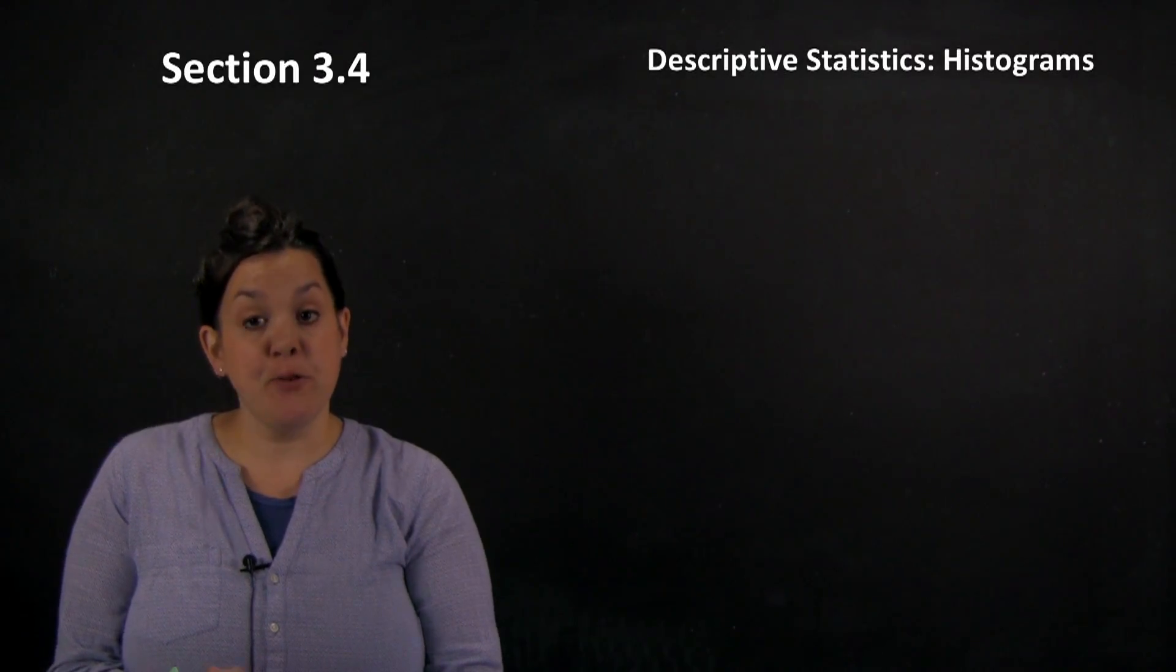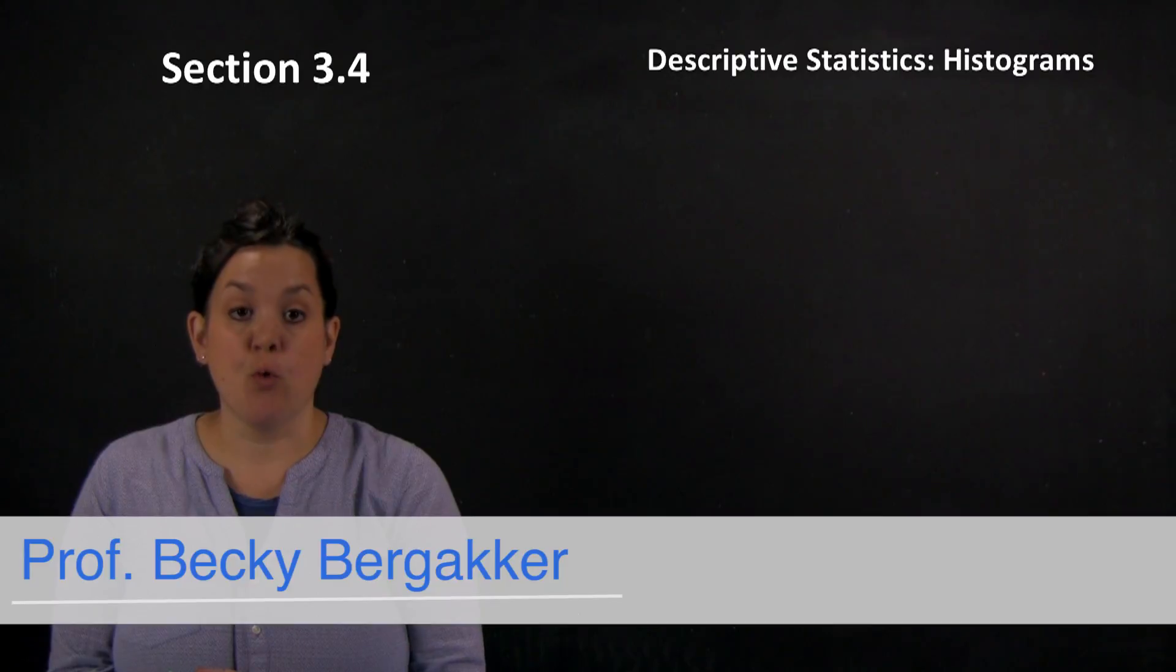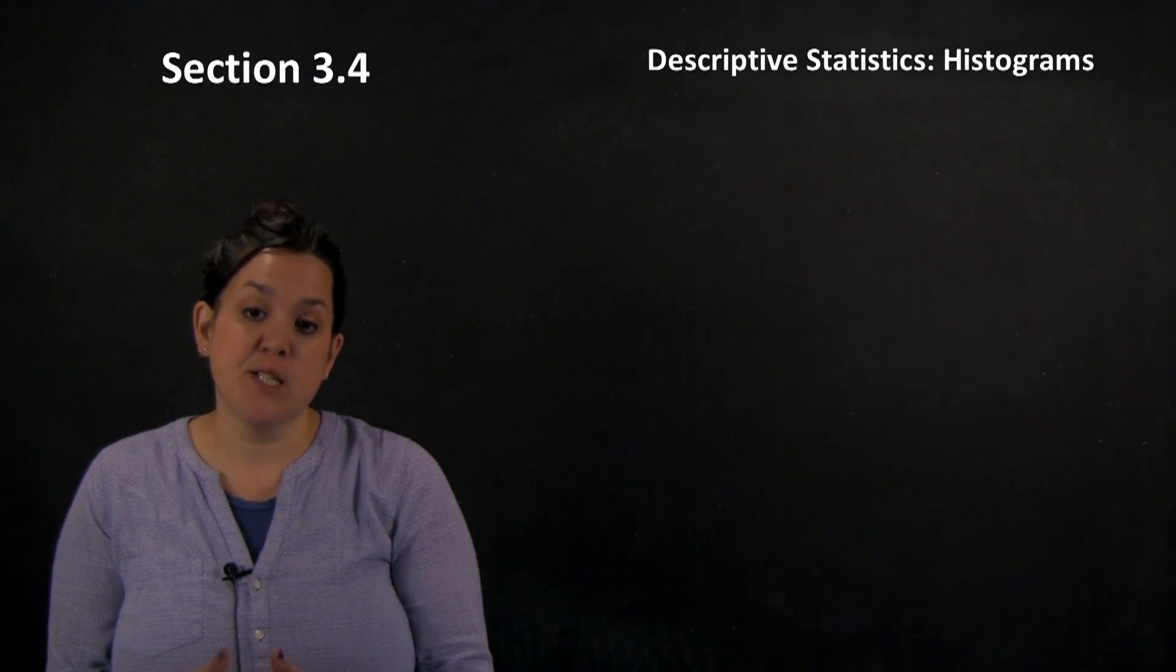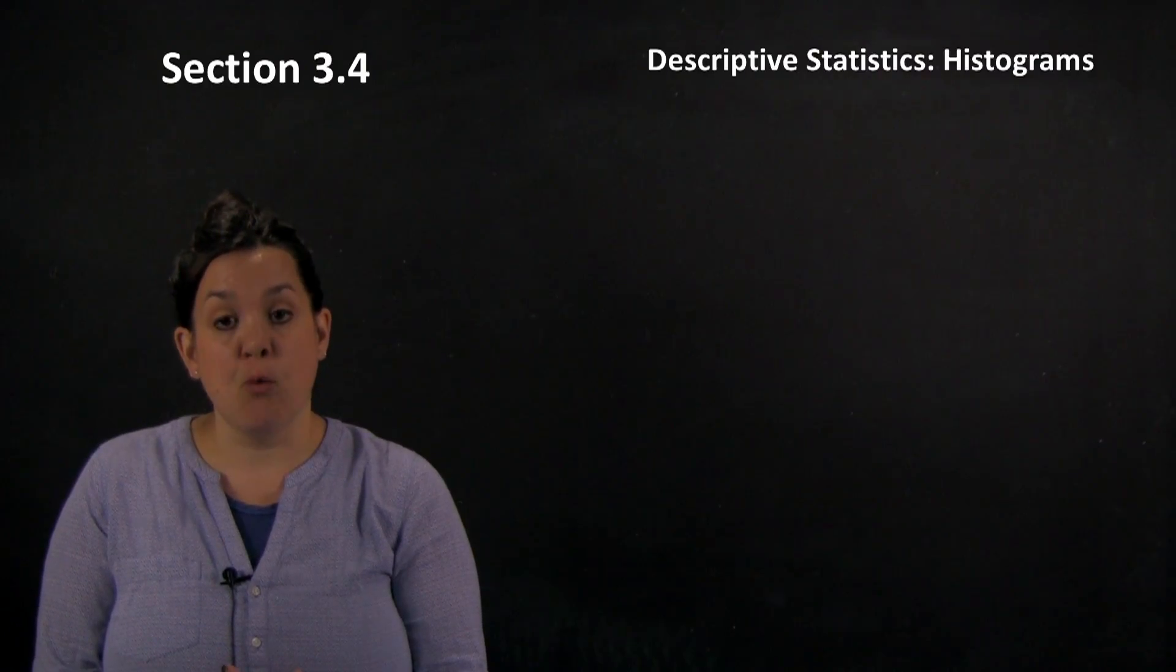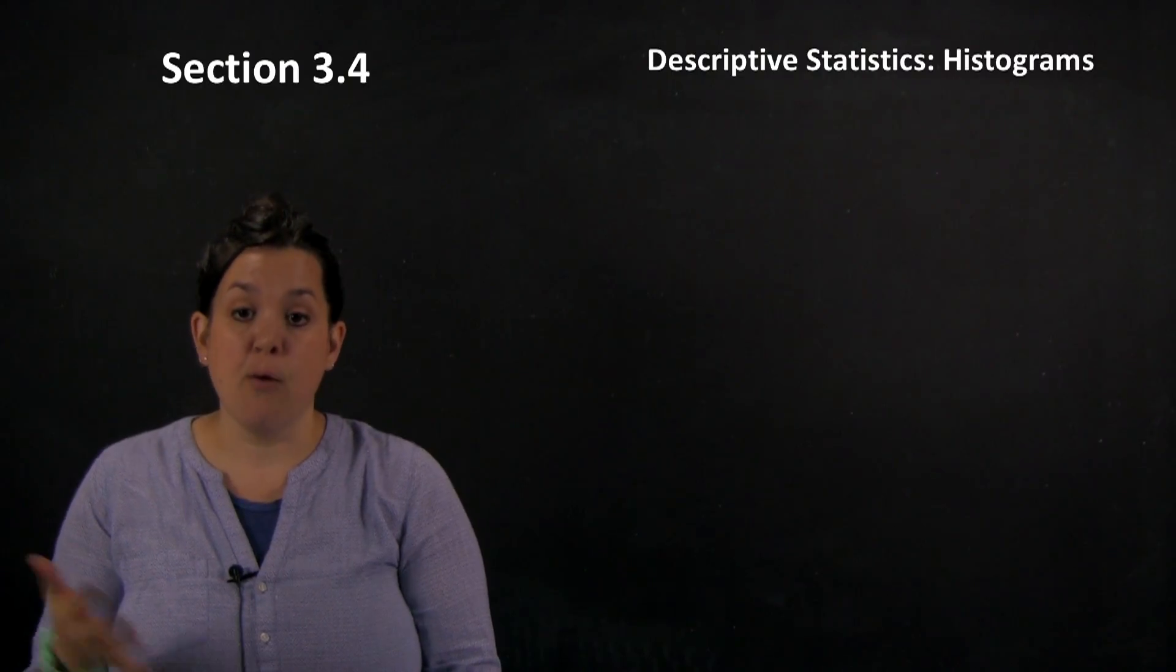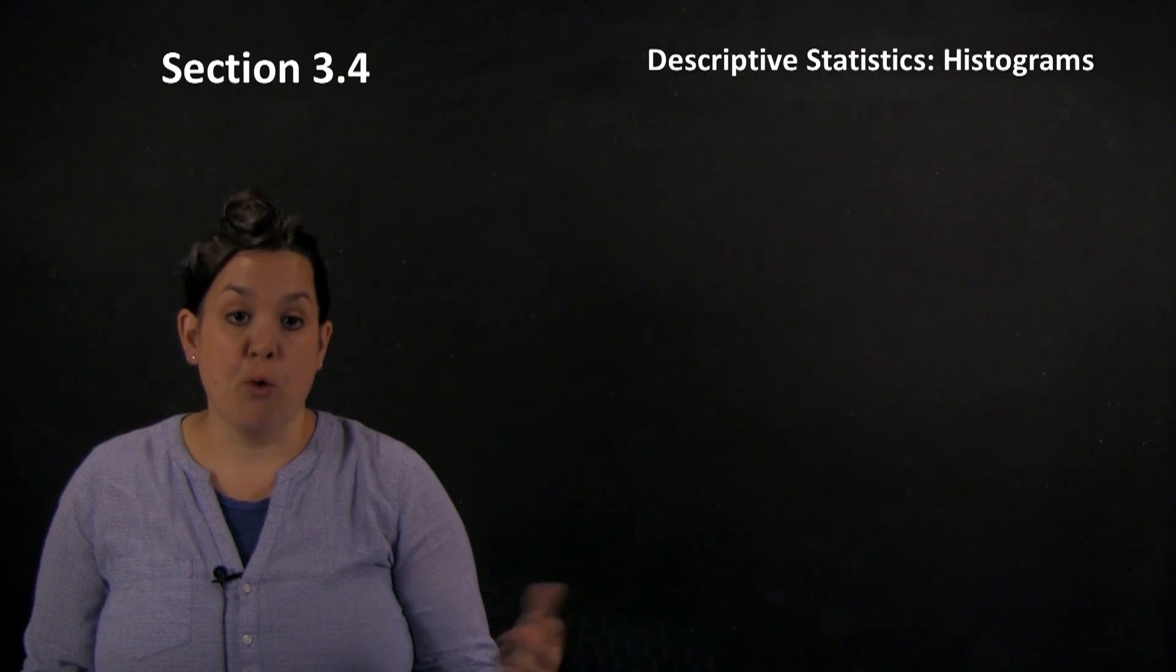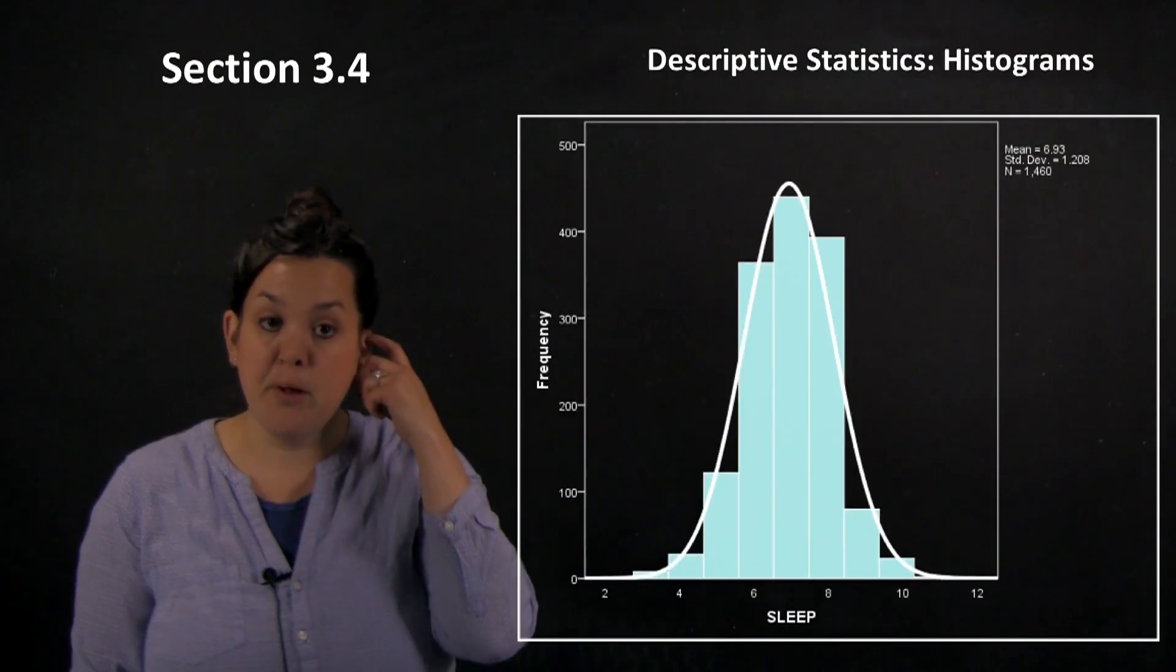Good morning class. We're continuing today our discussion of Chapter 3, which is the analysis of one quantitative variable. Right now we're looking at descriptive statistics. Specifically today we're looking at a different type of graphical display for one quantitative variable. One graphical display that we already looked at was a boxplot. Another one that we're going to look at today is a histogram. So here is an example of a histogram.